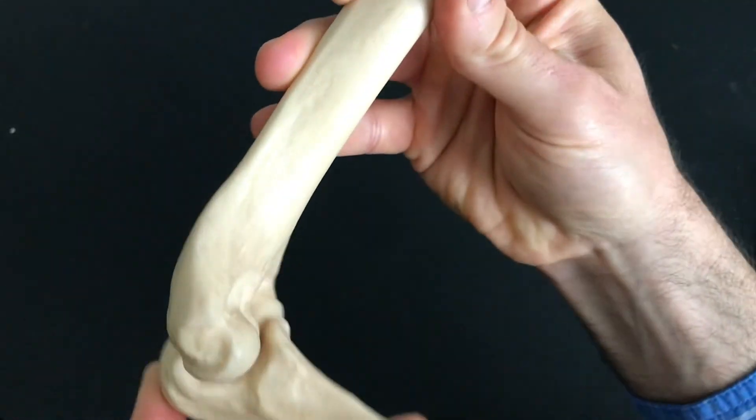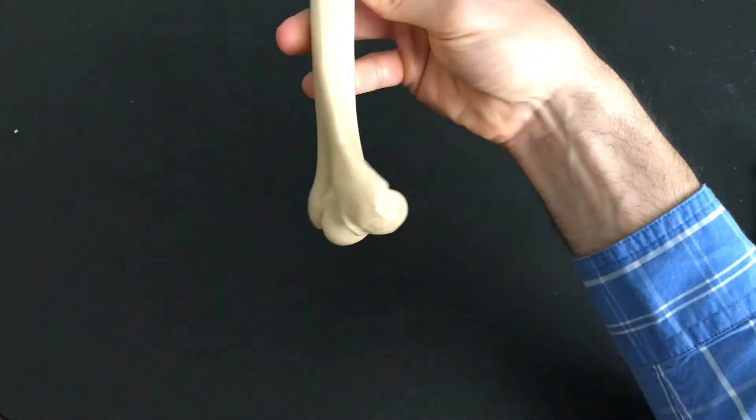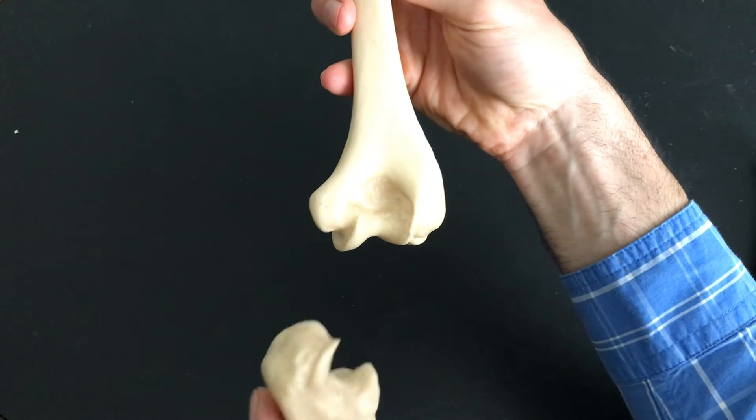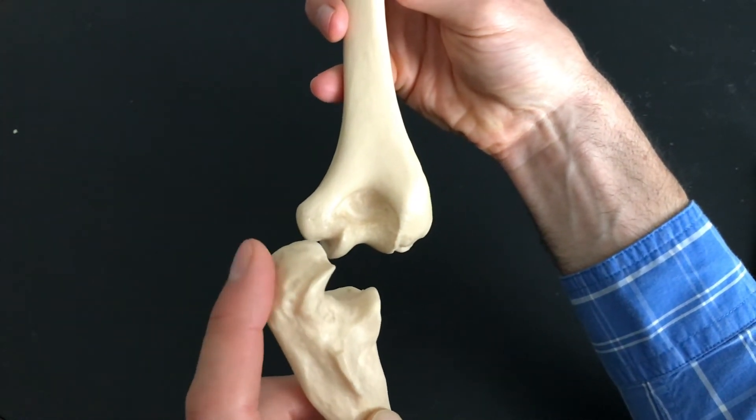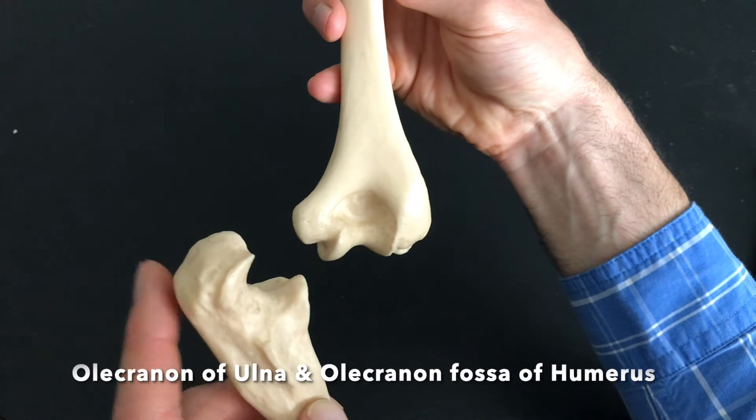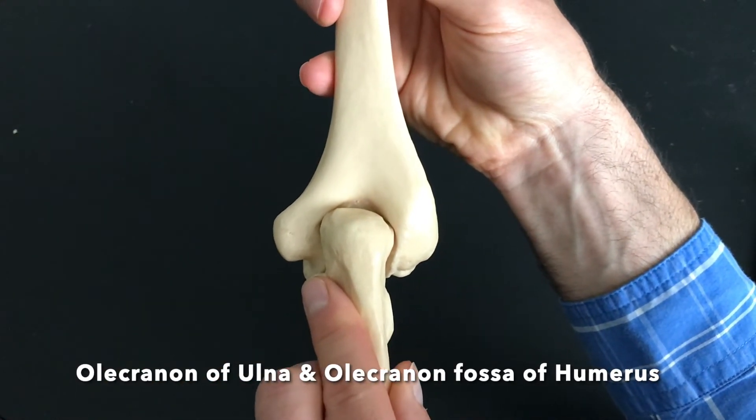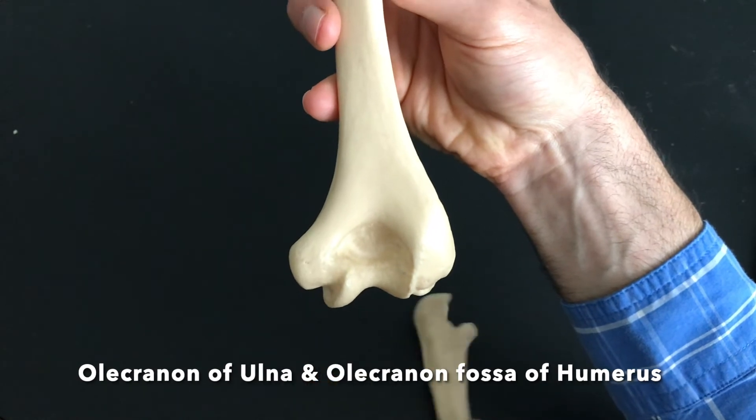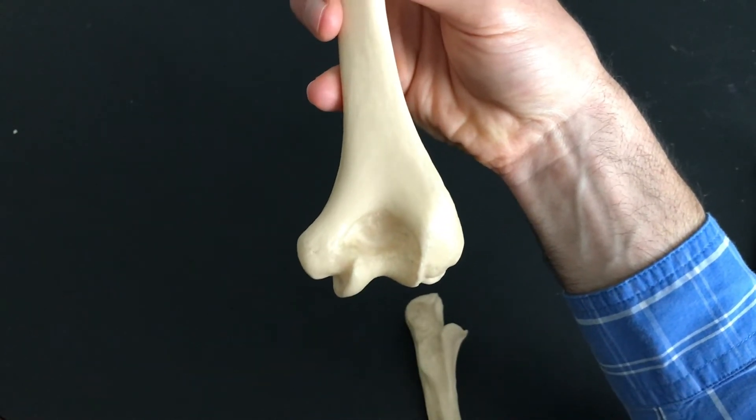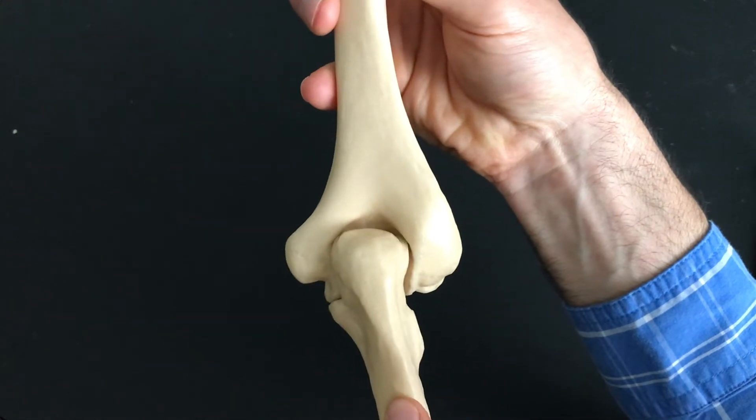And if I flip this around to the posterior side now, I'm going to tap the olecranon with my finger here. The olecranon, when you straighten out your elbow, is going to fit in the olecranon fossa. This is the olecranon fossa of the humerus. It's going to fit in just like that.